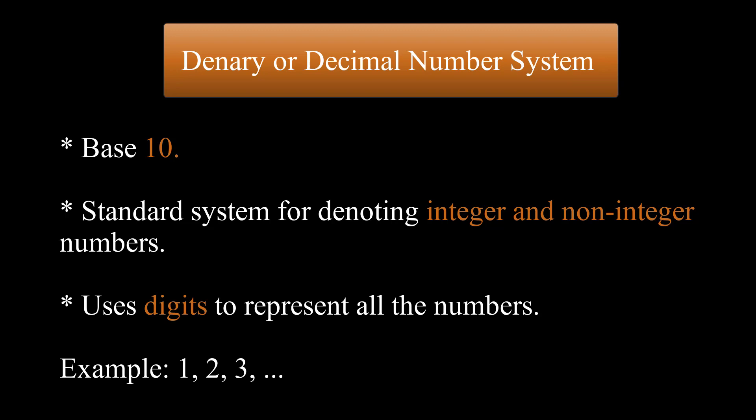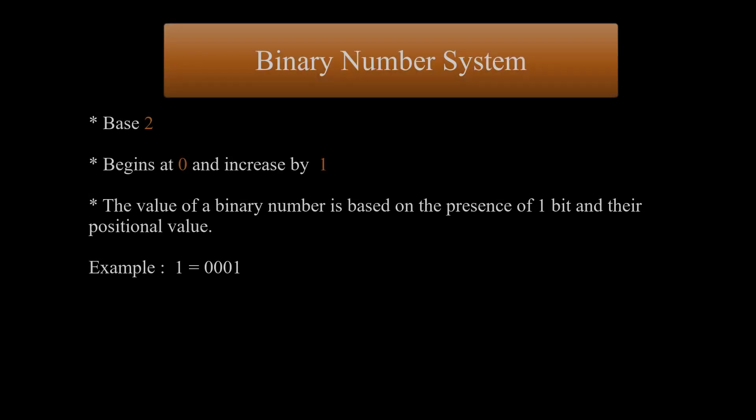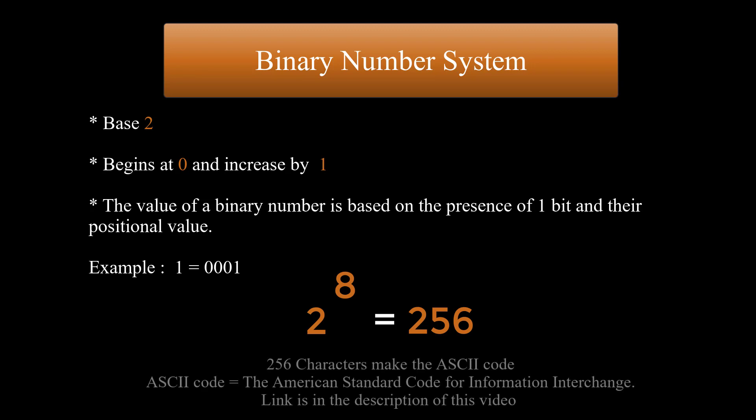Denary or decimal system uses digits to represent all the numbers. In binary number system, each position in which a digit is written has a different positional value. And each position is power of the base 2, and these powers begin at 0 and increase by 1. The value of a binary number is based on the presence of 1 bits and their positional value. In other words, since we only have 0s and 1s, and each byte is 8 bits, then we can have 2 to the power of 8 different combinations of 1s and 0s in each byte of memory. 2 to the power of 8 is equal to 256, hence the 256 characters of ASCII code, which is the American standard code for information interchange.